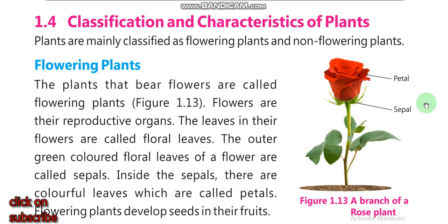Plants are mainly classified as flowering plants and non-flowering plants. Flowering plants are those plants which have flowers.